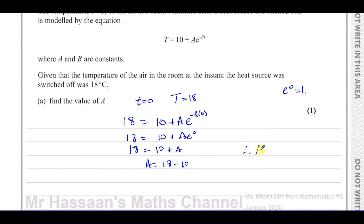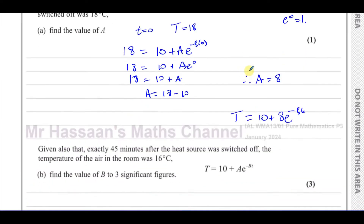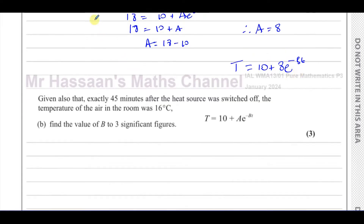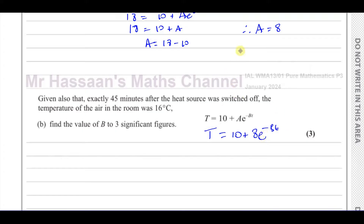Therefore A = 18 - 10, so A = 8. Now we know the value of A, so we can write T = 10 + 8e^(-bt). That's the answer to part a - we found the value of A.